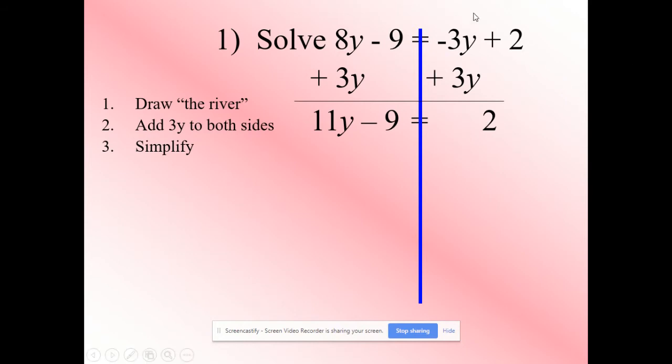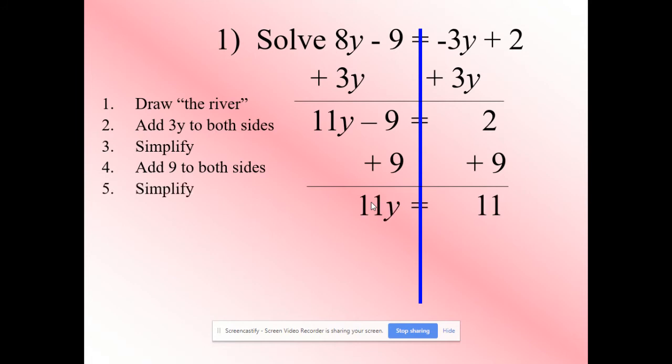So now we then want to get rid of our negative 9. Add 9 to both sides and now we're left with, simplify, 11y is equal to 11. So now what's happening to our variable, it's been times by 11.